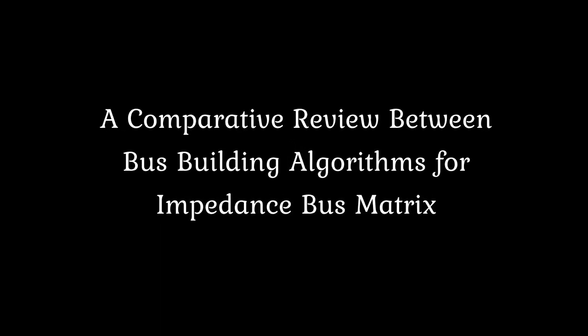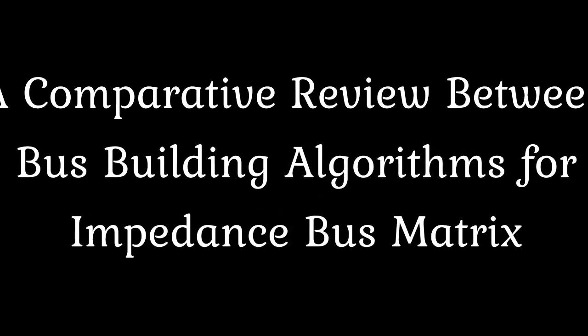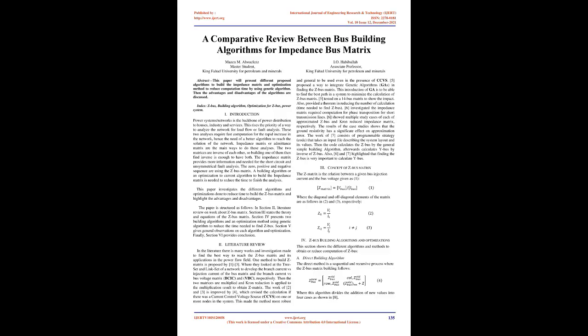A comparative review between bus building algorithms for impedance bus matrix. Abstract: This paper presents different proposed algorithms to build the impedance matrix and an optimization method to reduce computation time by using genetic algorithm. The advantages and disadvantages of the algorithms are discussed. Index terms: Z-bus building algorithm, optimization for Z-bus, power system.